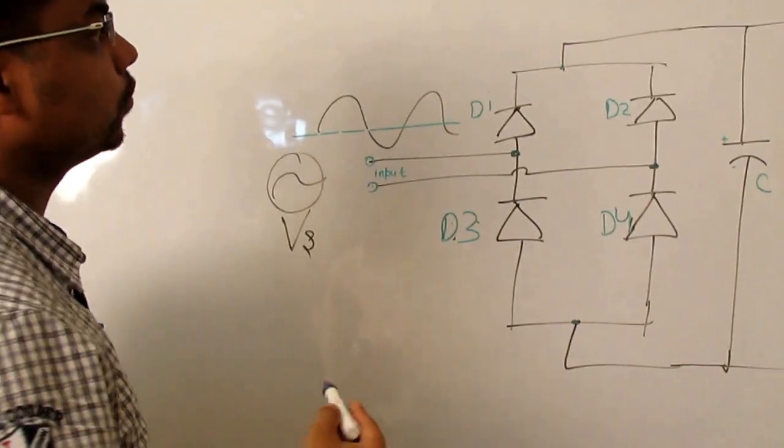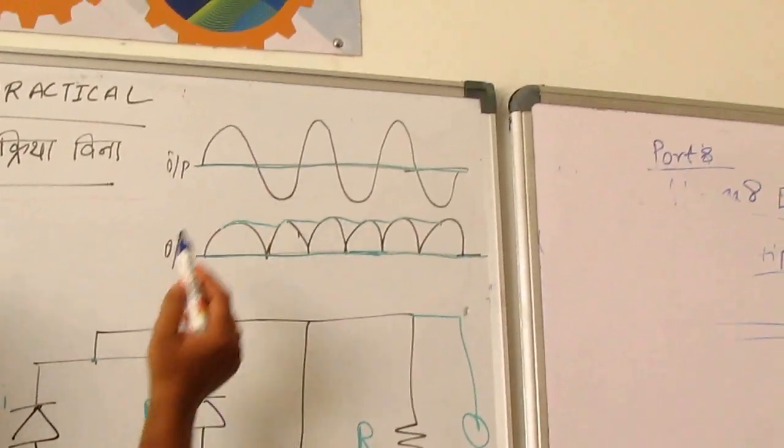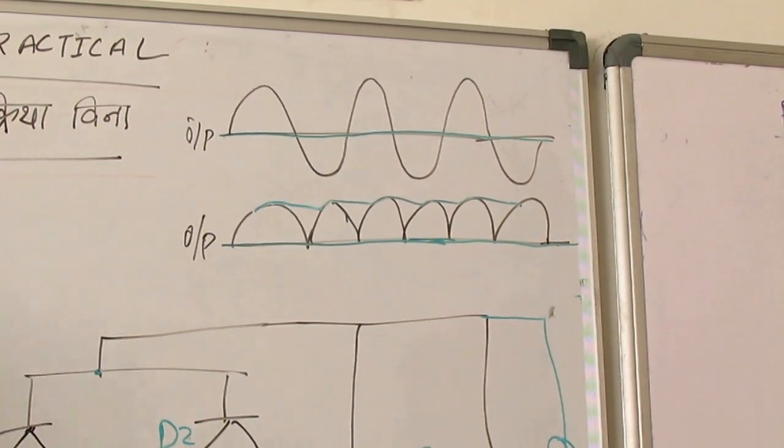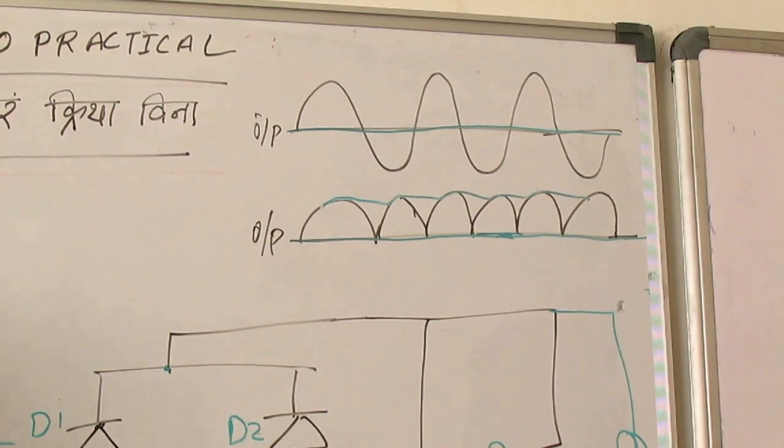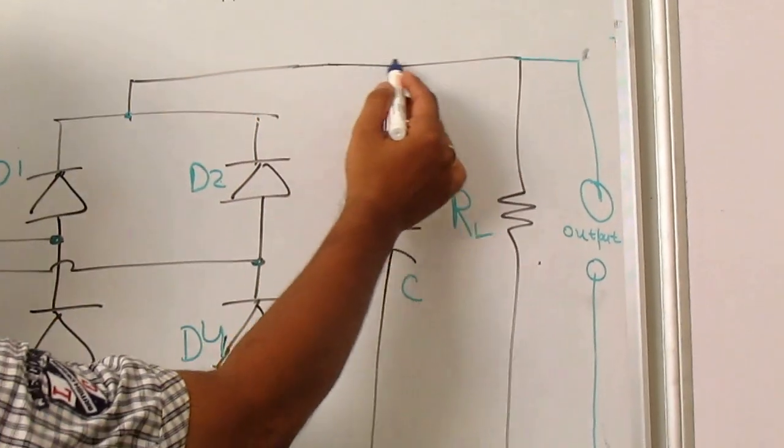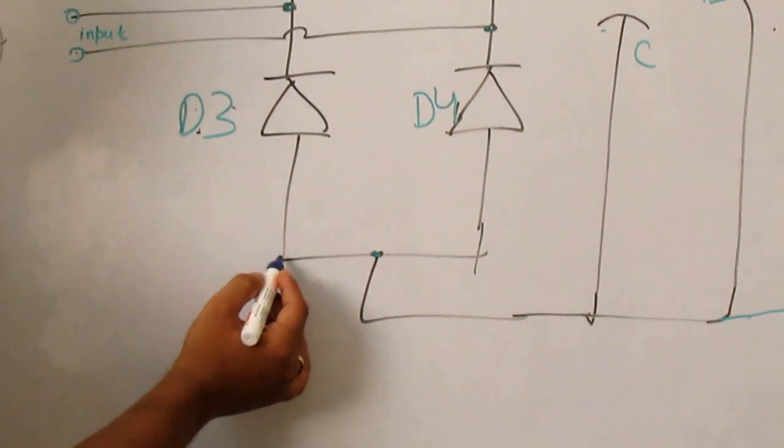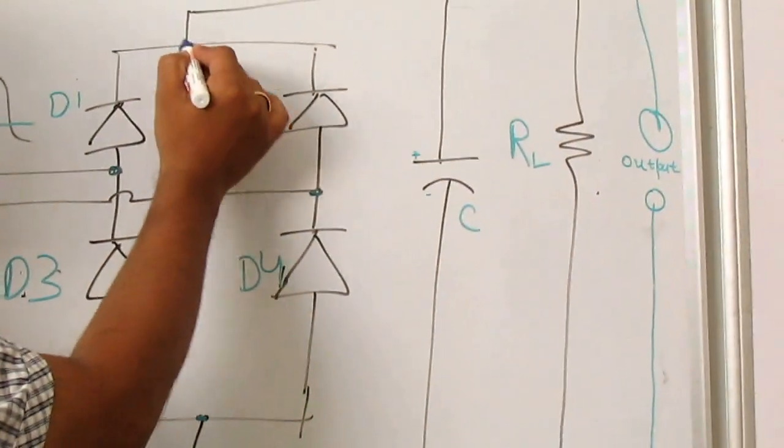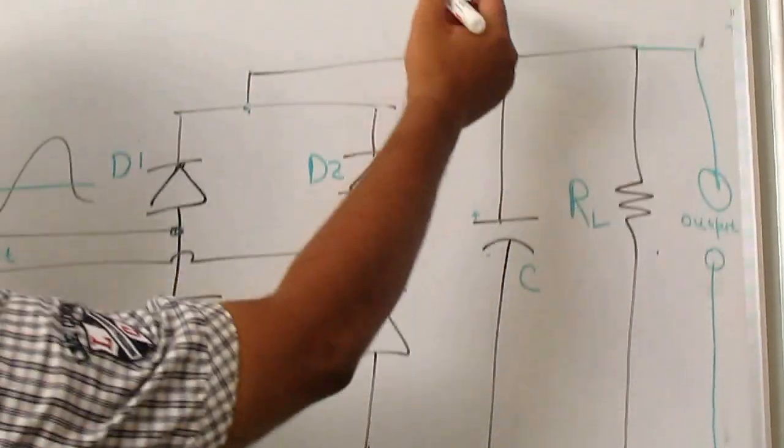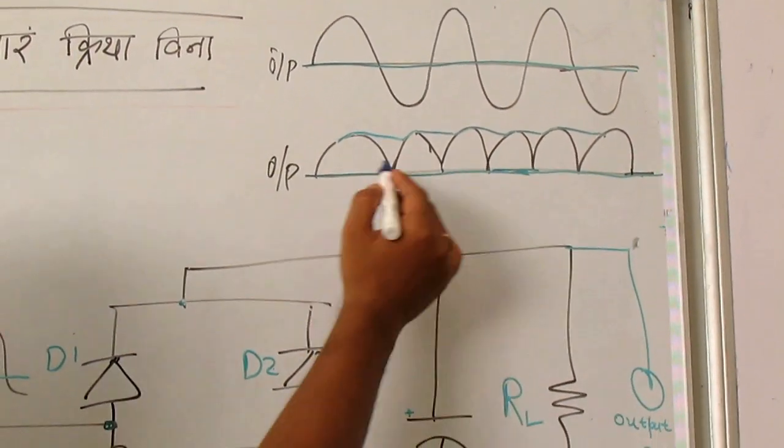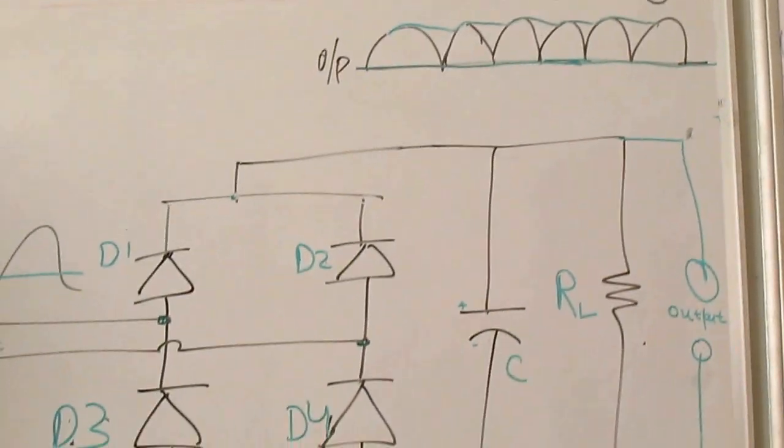So, we can see the waveform input and output. This one is the input waveform. During the positive half cycle, we are getting a positive waveform here between these two points as shown in this black waveform. And during the negative half cycle, what will happen? This point is at higher potential. So, D2 will conduct. Then current will go from here, then it will go to RL, then come back here. Then it will go to D3, then come back to this input again. So, again we have seen this one has positive waveform. During this negative half cycle, we are getting this positive cycle at these two points. So, this is the function of these four diodes.